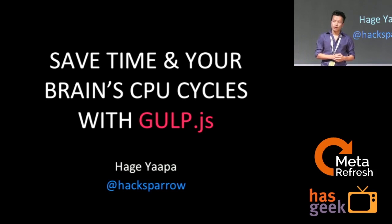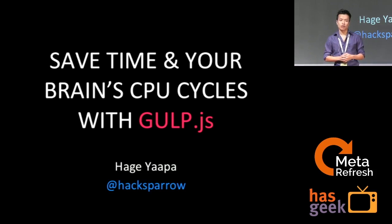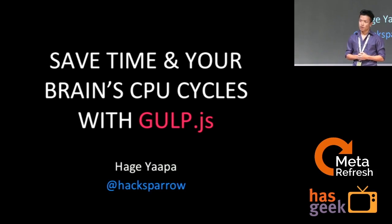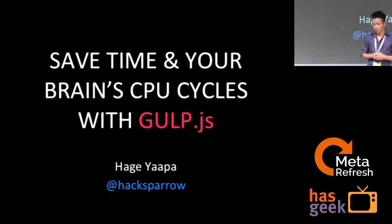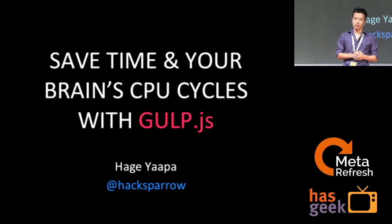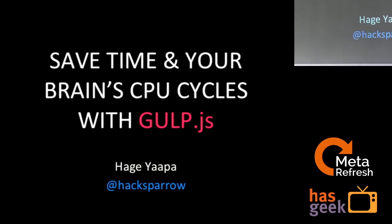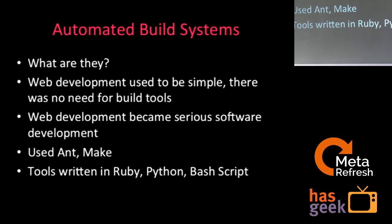These things can be taken care of by an automated build system, and that's what I'm going to talk about. Specifically, gulp.js, which is probably the build system rising at a meteoric rate for web developers. So my talk is titled: Save Time in Your Brain CPU Cycles with gulp.js. As I was mentioning about automated build systems — what are they?